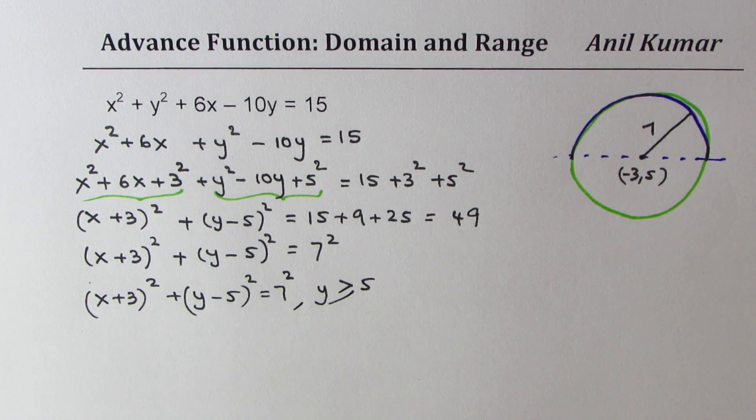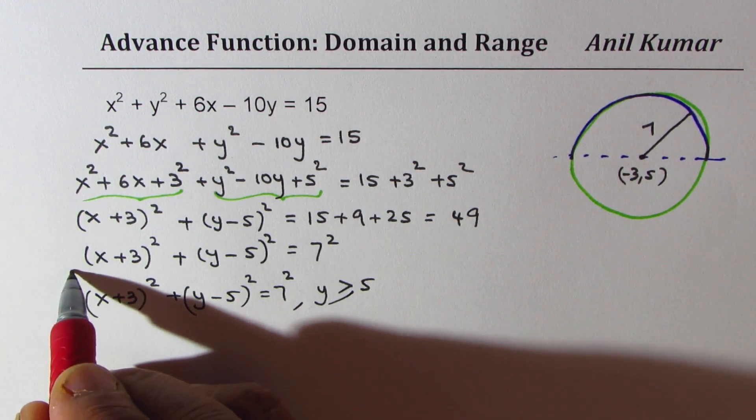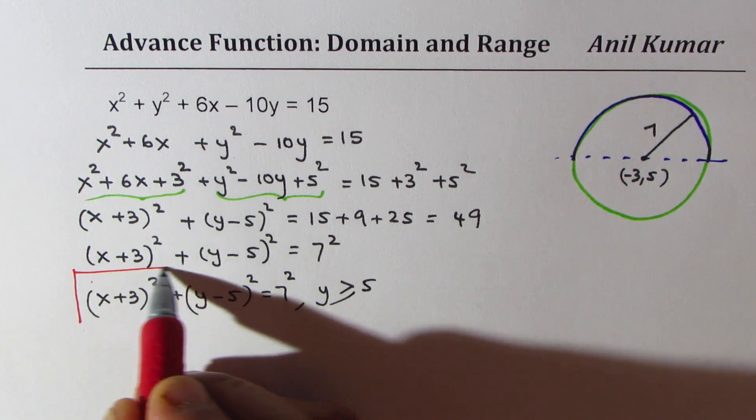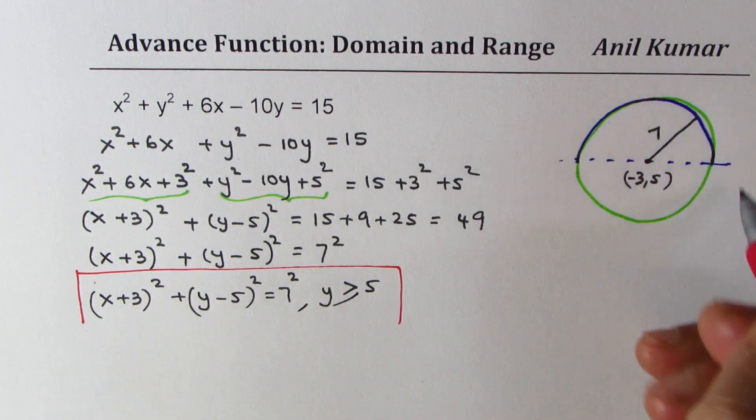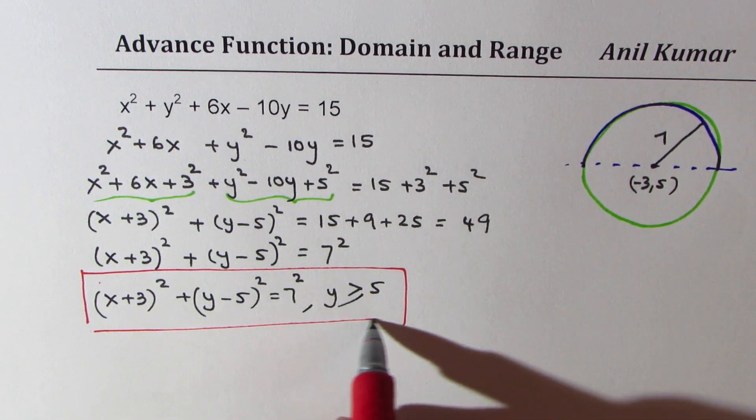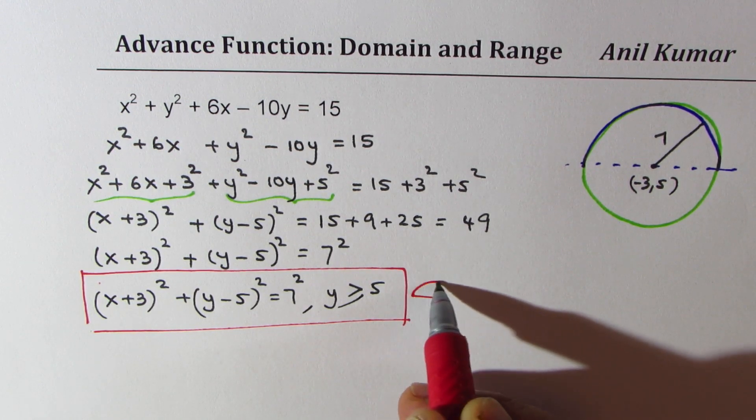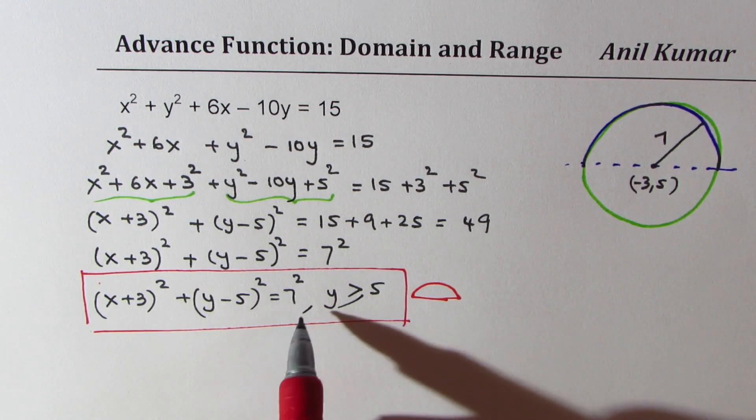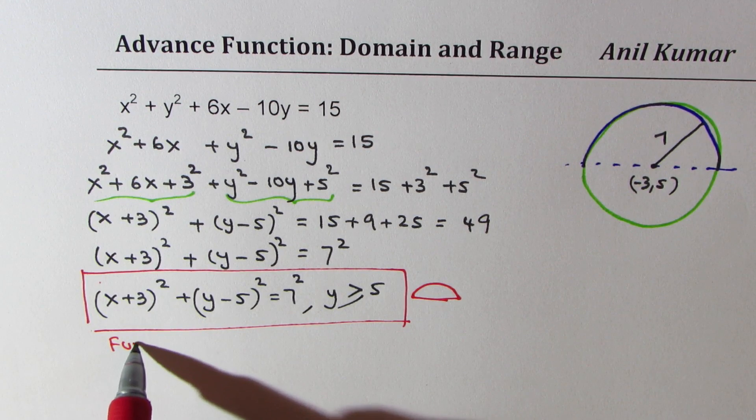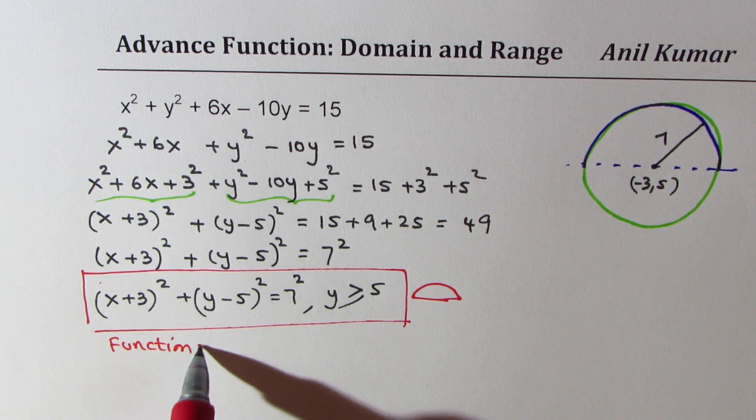So we can have an equation like this. Now this equation is clearly of the upper half of the circle so it is a semicircle, this is the semicircle we are talking about. Is that okay? And that is a function.